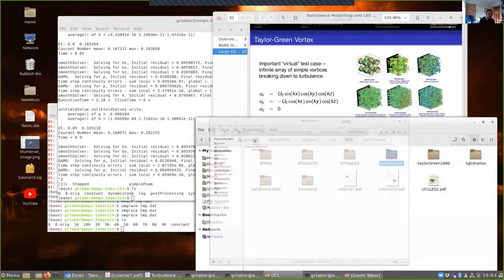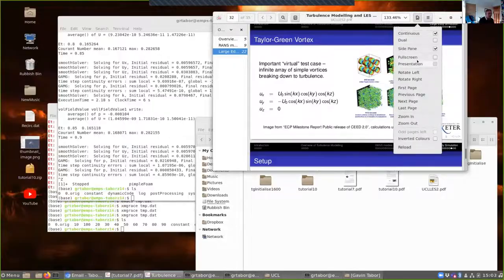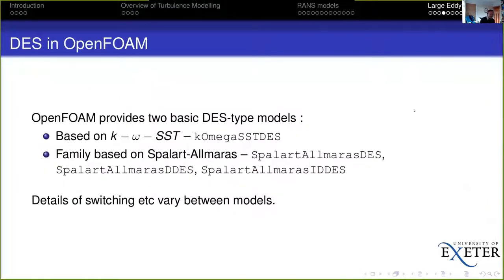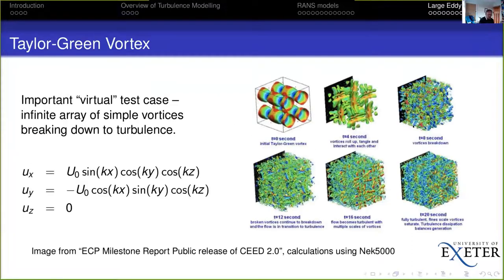Carrying on from yesterday's presentation, I was talking about large eddy simulation. I've done a little bit on an LES calculation of the backward-facing step flow, and I showed you how to set up a function object to do a continuous averaging process, which is one of the things we very often want to do with LES. I'd also put together some material on the Taylor Green Vortex, and rather than just leaving this for you to look at on your own, I thought it would be nice to talk through a couple of the aspects.